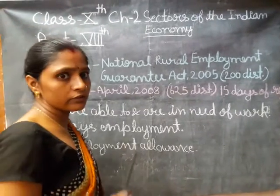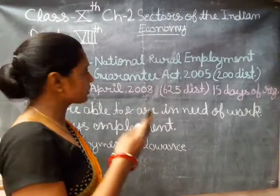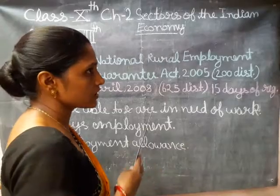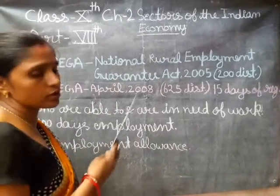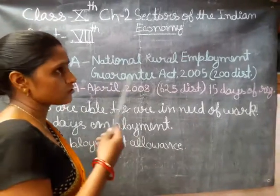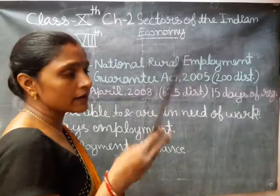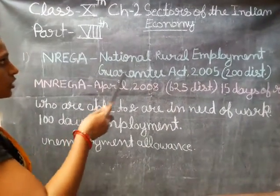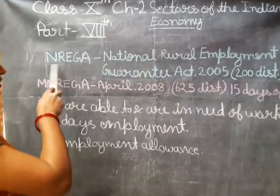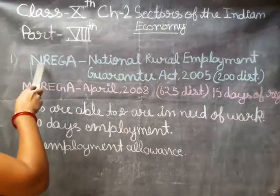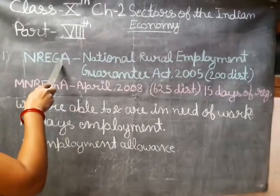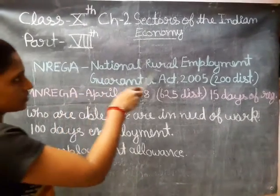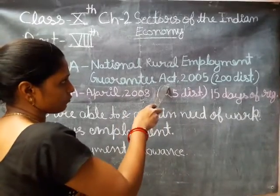Hello everyone. In this video we will try to understand the law which was passed by the Central Government in 2005, that is known as MGNREGA at present. When the Central Government started it, its name was NREGA — N-R-E-G-A — which stands for National Rural Employment Guarantee Act.